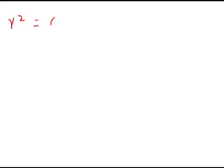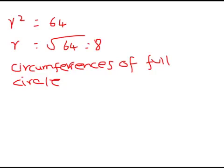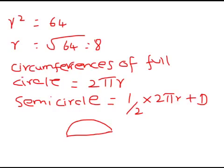Now we have to find out circumferences. The formula for circumferences of full circle is 2πr. Half circle or semicircle would be half into 2πr plus d. Why is that? Half circle is this, so for this we are adding the d.